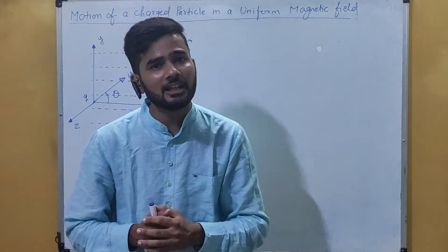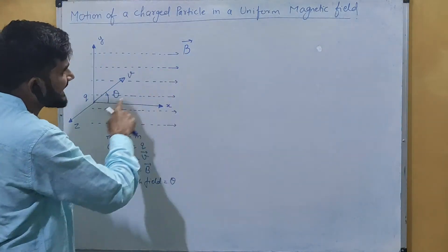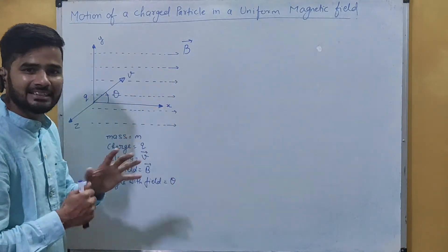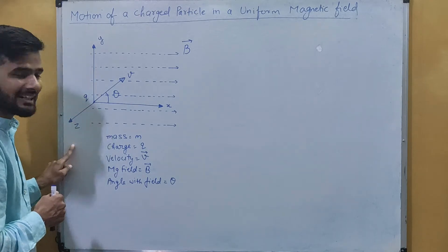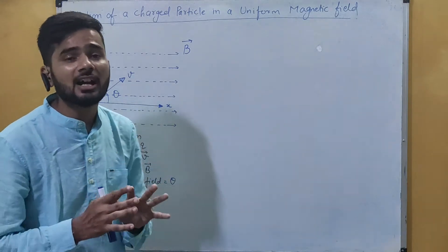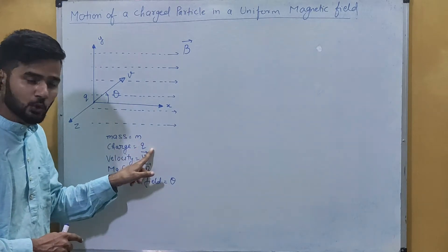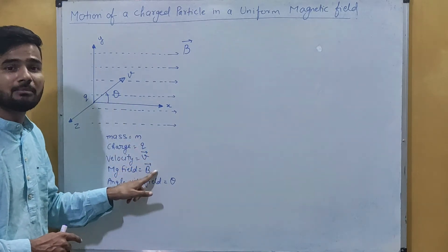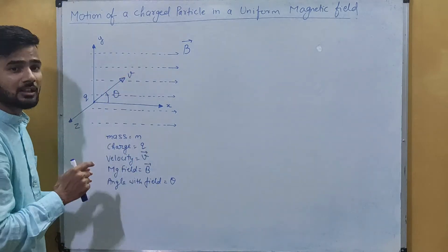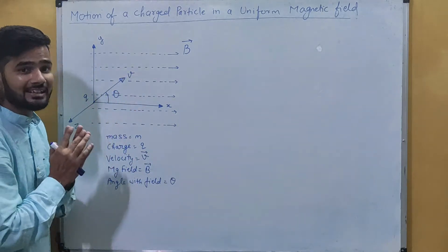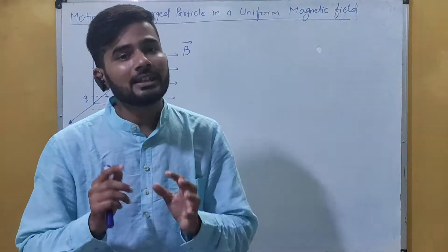Our topic is the motion of a charged particle in a magnetic field. We will assume we have a magnetic field along the x-direction, with a y-axis and z-axis. We have a charged particle of mass m, charge q, velocity v, and the magnetic field is B. This particle is moving in the magnetic field making an angle theta with the magnetic field.